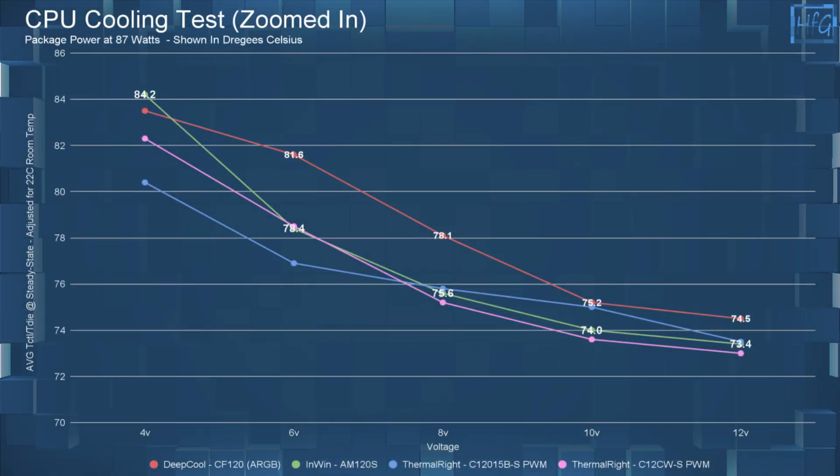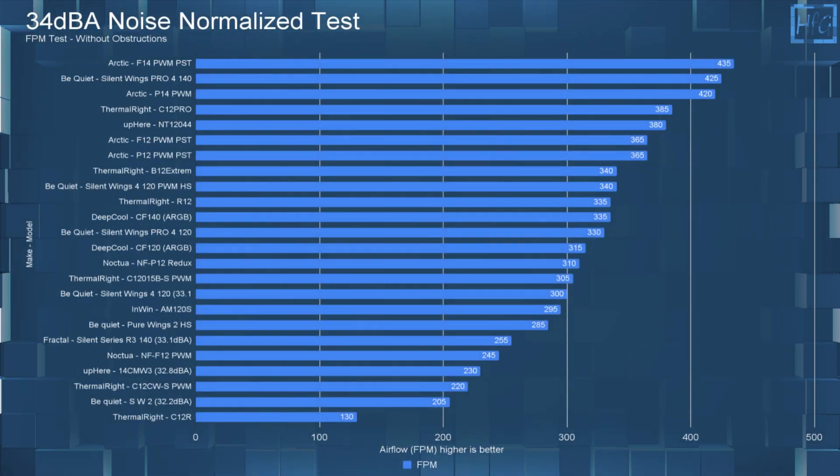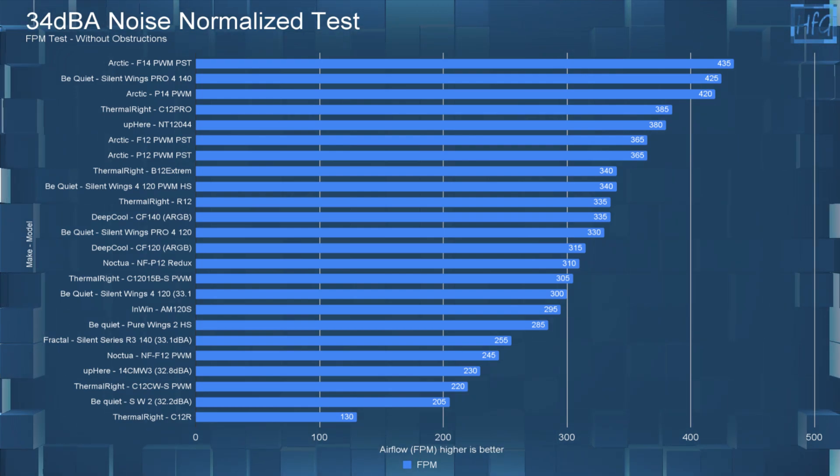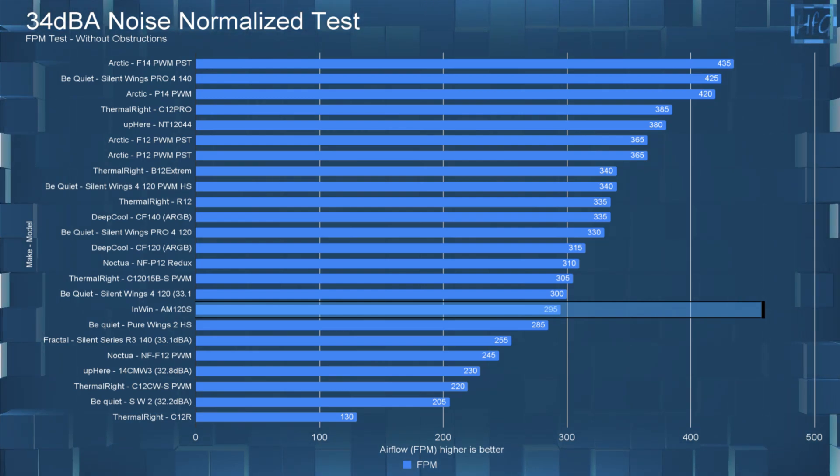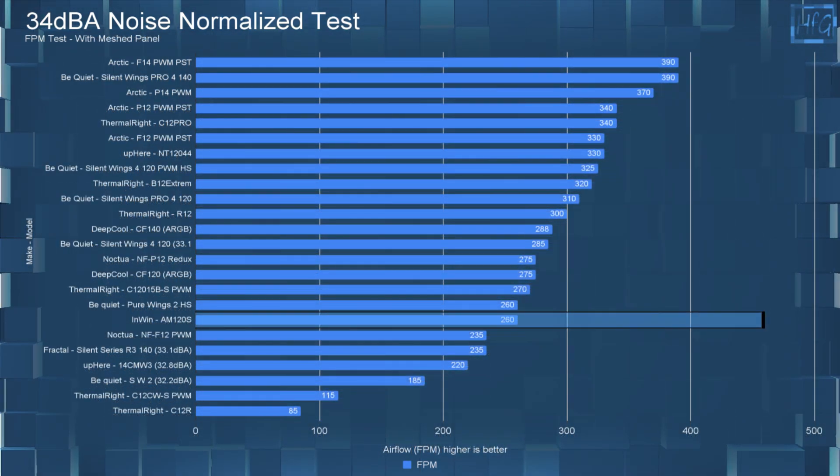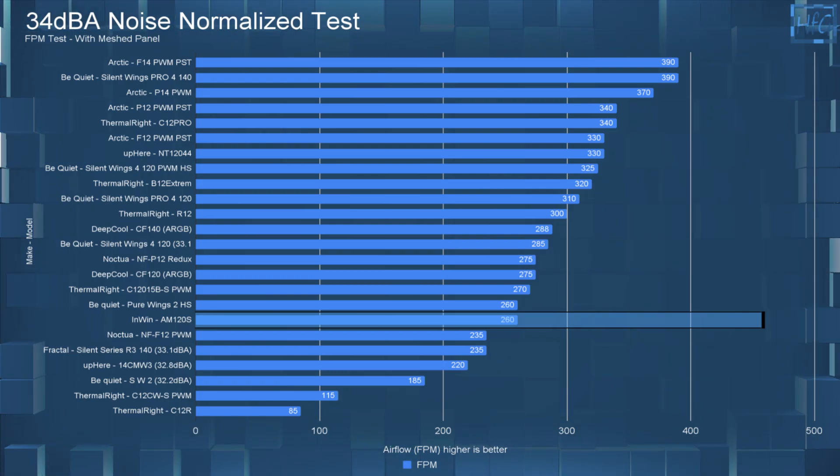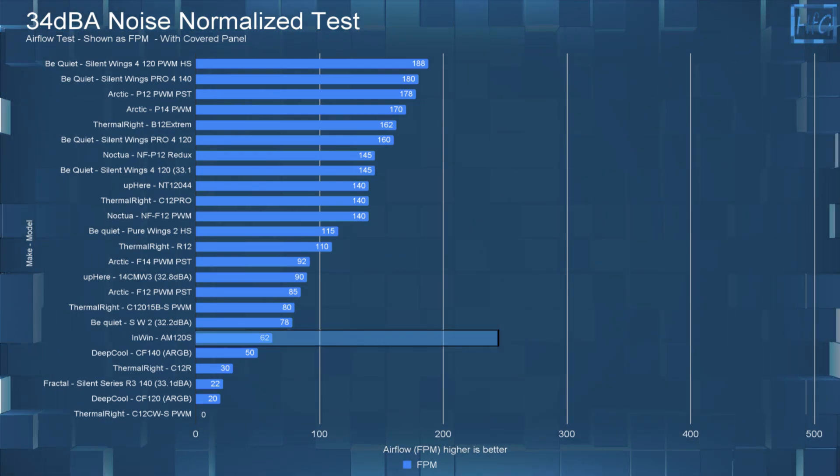For the CPU cooling performance, the AM120S, the C12015, and the C12C, all do pretty well at 6 volts and up. And that brings us to the 34 dBA noise equalized testing. So having all the fans noise equalized to 34 dBA or 12 volts if they don't make it to 34 dBA. So with no obstructions, the Inwin AM120S performs okay-ish with an FPM of 295. With the mesh panel, it again performs okay-ish with an FPM of 260. With the covered panel, it performed not well, but not many fans do, with an FPM of only 62.